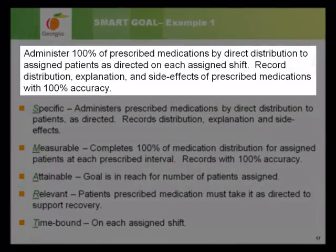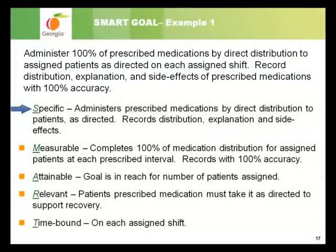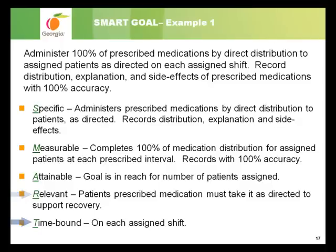Example 1 is now a SMART goal: 'Administer 100% of prescribed medications by direct distribution to assigned patients as directed on each assigned shift. Record distribution, explanation, and side effects of prescribed medications with 100% accuracy.' It is specific — administers prescribed medications by direct distribution and records distribution, explanation, and side effects. It is measurable — completes 100% of medication distribution at each prescribed interval and records with 100% accuracy. It is attainable — this goal is in reach for the number of patients assigned. It is relevant — patients prescribed medication must take it as directed to support recovery. It is time-bound — on each assigned shift.